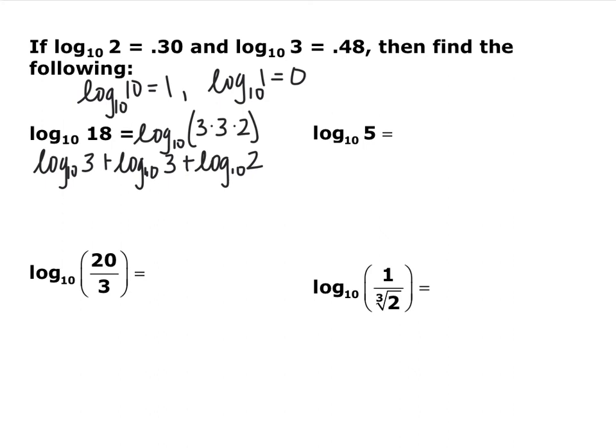Multiplication inside becomes addition outside, so we have log base 10 of 3 plus log base 10 of 3 plus log base 10 of 2. And now we can take what we know those are equal to and add them together. Just replace the log of 3 with 0.8 and the log of 2 with 0.3, added them together, and you get 1.26. So now I want you to pause the video and try the other three. They're going to be difficult, but be creative.